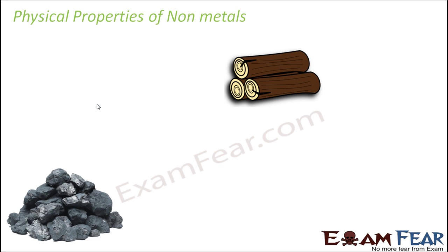We are going to discuss the same physical properties which we had discussed for metals. The first physical property was luster. In metals, they had a shining surface, but in case of nonmetals they do not have any shiny surface. The best example is wood or coal — both contain carbon — and they do not have any shiny appearance like gold, silver, or copper.